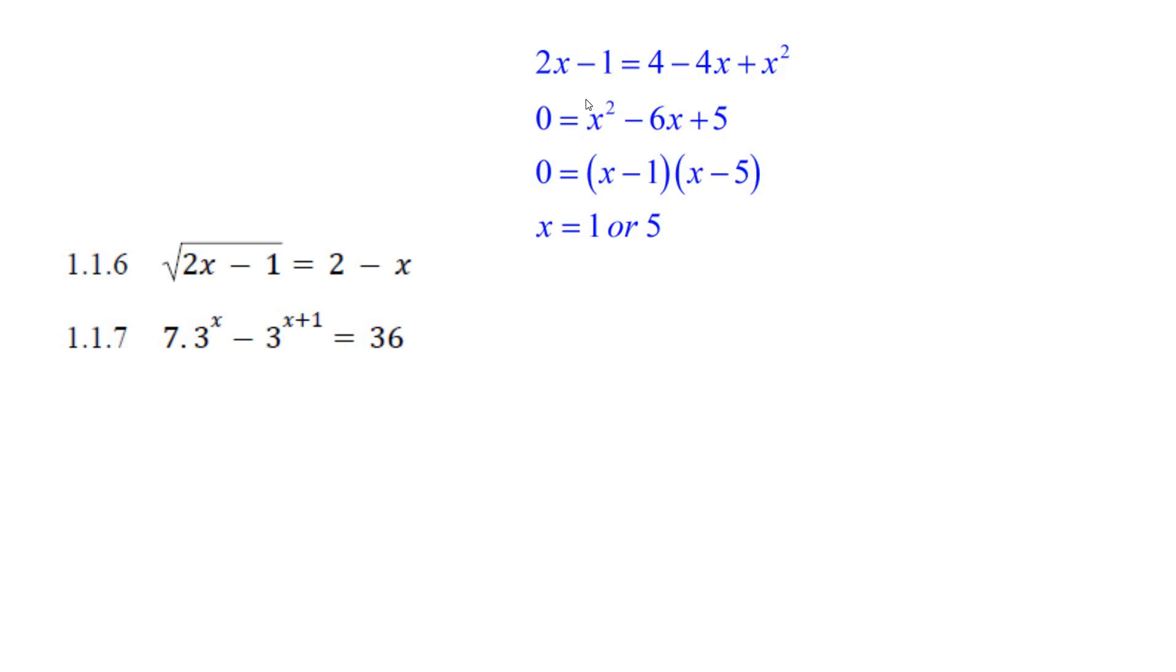And then you just put it in standard form. Add 1 and take away 2x. You get x squared minus 6x plus 5.